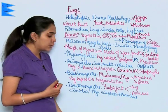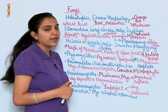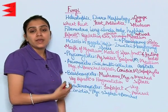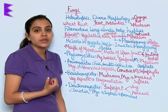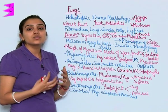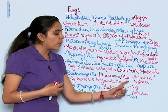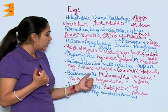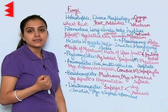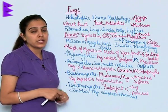Their mycelium is branched and septate, and they reproduce by vegetative propagation through the process of fragmentation. Next is Deuteromycetes, also known as imperfect fungi, because only their vegetative and asexual forms are known. When their sexual form is observed, it is believed they move into their original class — either Basidiomycetes or Ascomycetes. Their mycelium is septate and branched, and they reproduce only asexually through conidia formation.